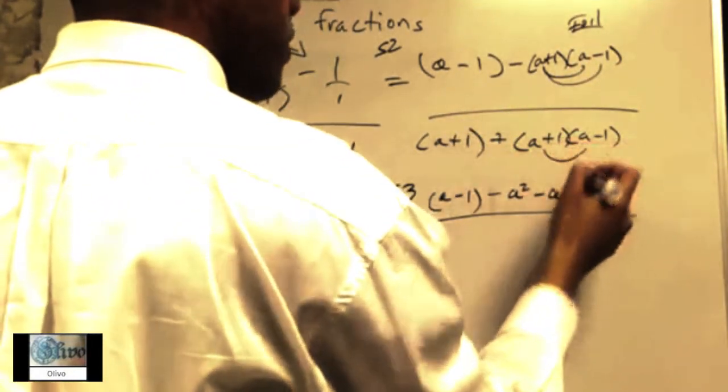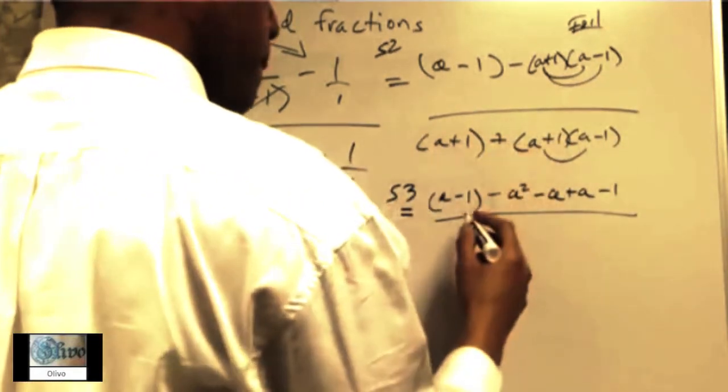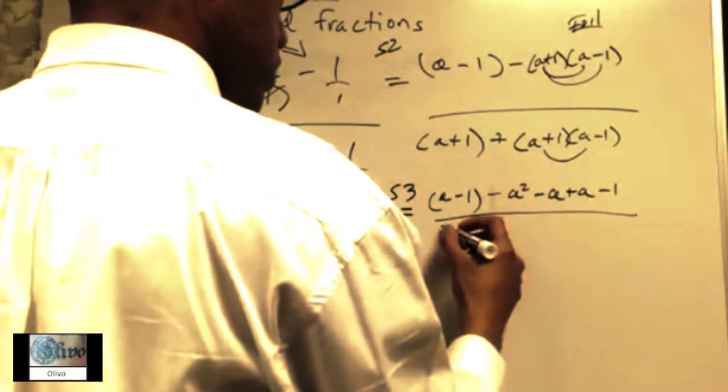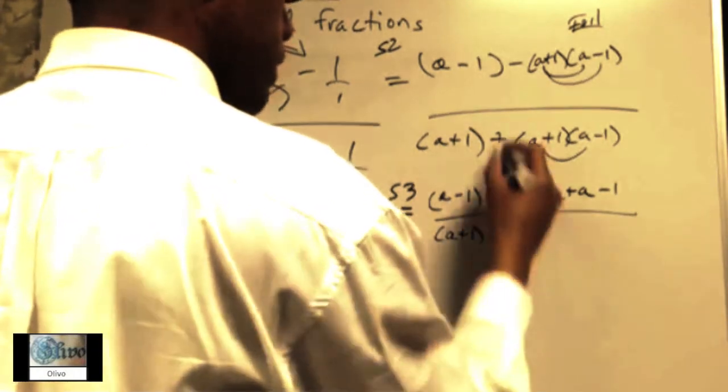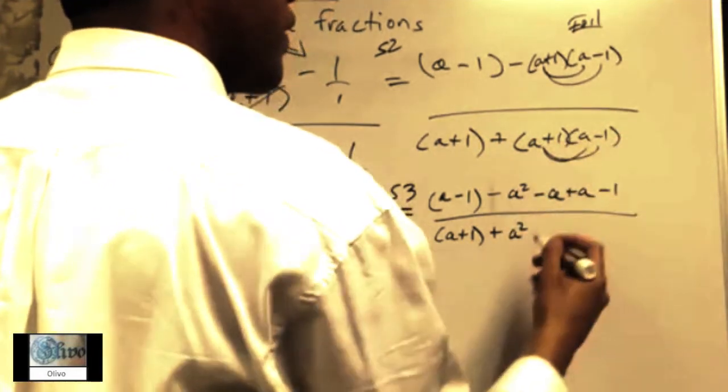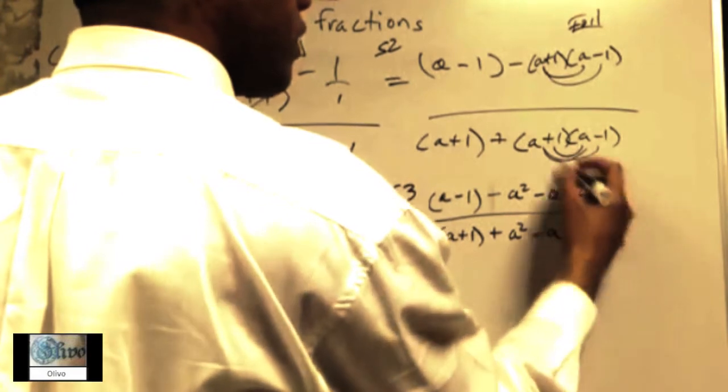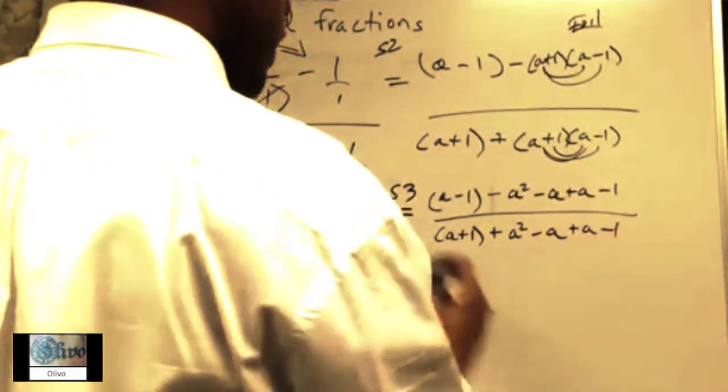Then you do the same thing for the bottom, the FOIL method. So this is your denominator—this part here. You bring over the same thing, forget about your sign. You get a², outer, outer, inner, last.